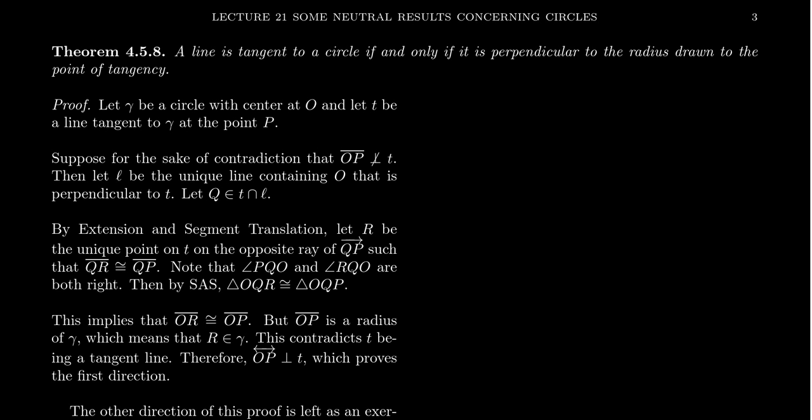And this has to do with tangent lines with regard to circles. So the theorem that we're going to prove here is that a line is tangent to a circle if and only if it's perpendicular to the radius drawn from the center of the circle to the point of tangency. So this is an if and only if statement. There's two directions that have to be gone here.